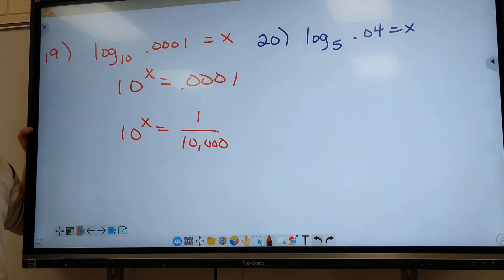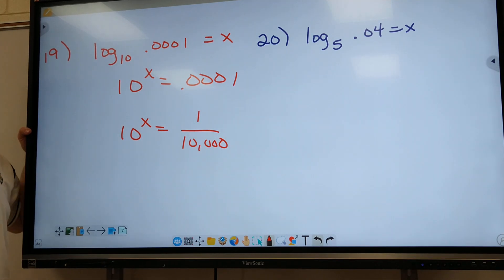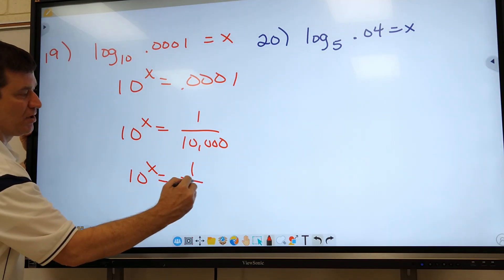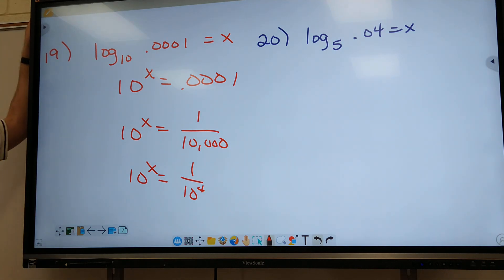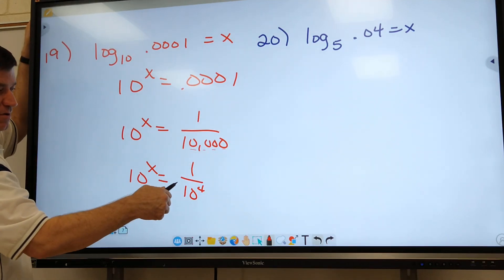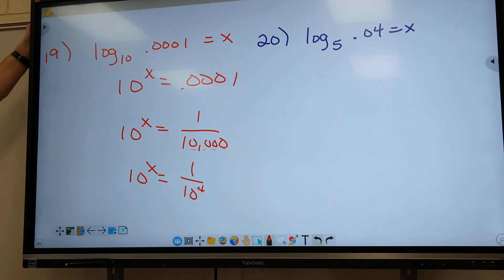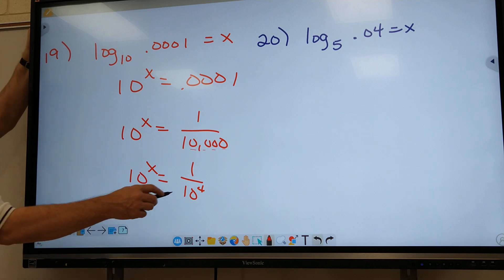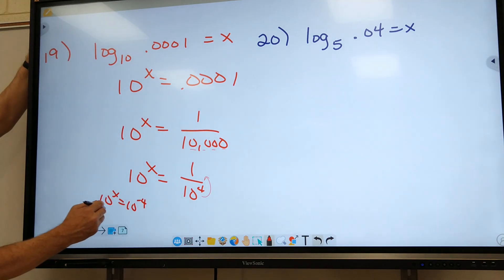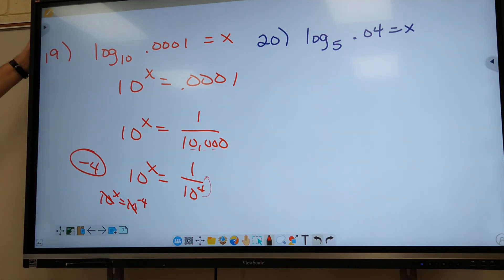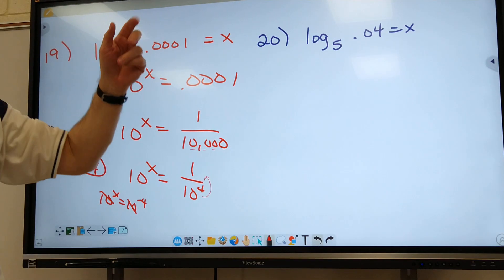All right. So now we should be able to work it out. All right. Ready? 10 to the x equals 1 over 10 to the 4. Wait a minute. How did I change that? How did I know it was going to be 10 to the 4? Count your, now that's where you count your zeros. So it's 10 to the 4. Now, from here, you should know what the answer is. If you want to skip a step, what's the answer? Watch. What happens with 10 to the 4 when I move it up? There you go. So it's 10 to the x equals 10 to the negative 4. Mark them out. Your answer is negative 4 on that. All right. So that one was a bit longer. Try 20. It's just like 19.